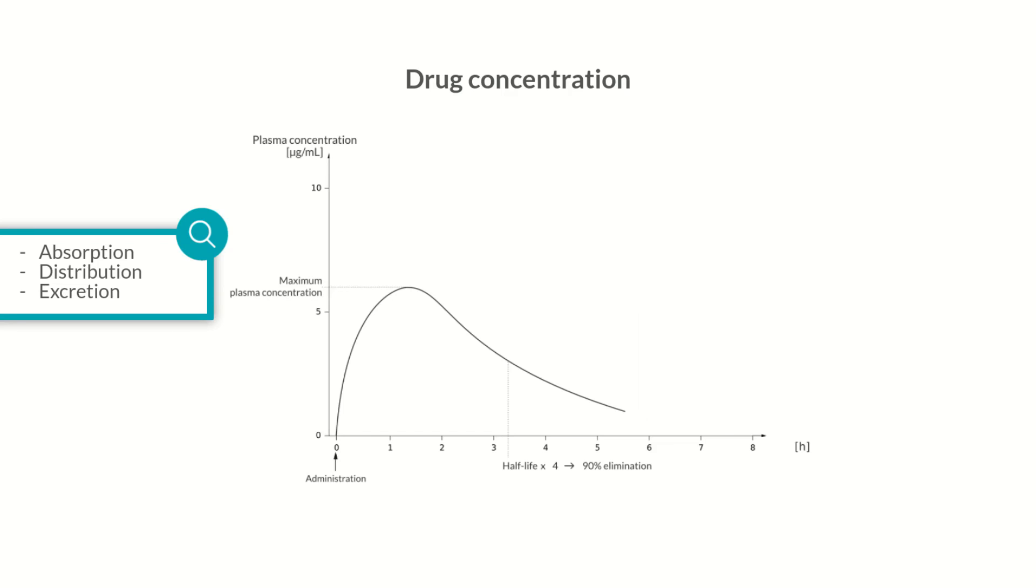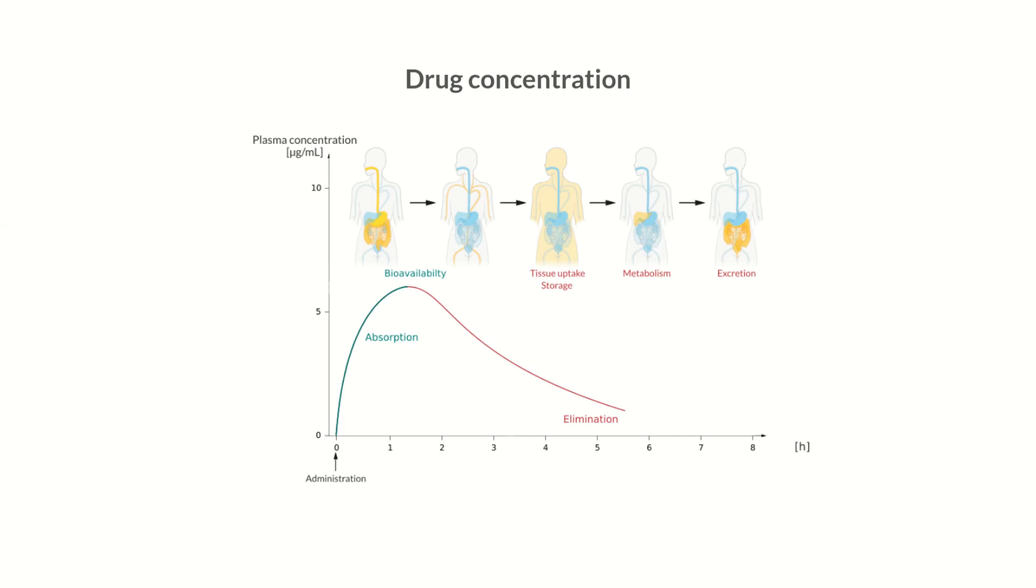Let's finish this first look at pharmacokinetics with a summary. The first part of the plasma concentration time curve, that is, from administration to its maximum, predominantly depicts the absorption phase. Therefore, it represents the bioavailability of the drug. The second part of the curve is dominated by elimination processes. These will be the focus of part two of our Chalk Talk episode on pharmacokinetics.